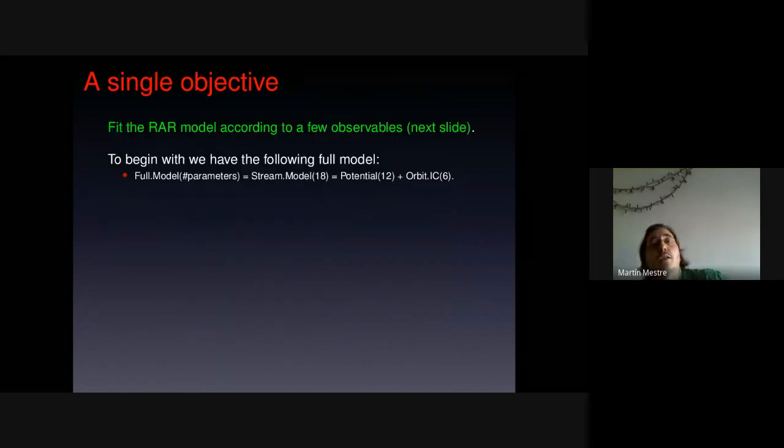Well, so a single objective of this talk, of this work, is to fit the RAR model according to a few observables, which will be shown in the next slide. Our model, our full model has got 18 parameters, 12 from the potentials and 6 from the initial conditions of the orbit of the stream. The stream will be modeled as the orbit because I said it is a cold stream.